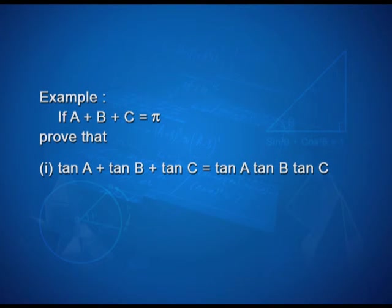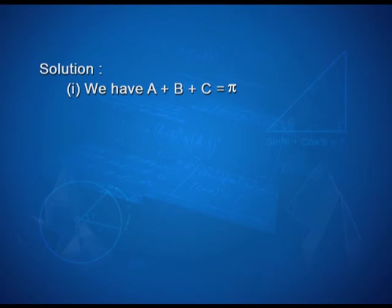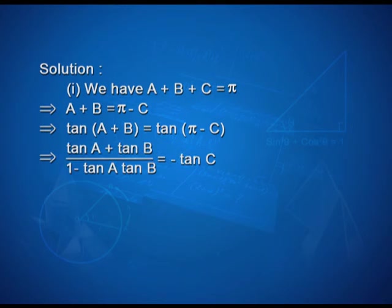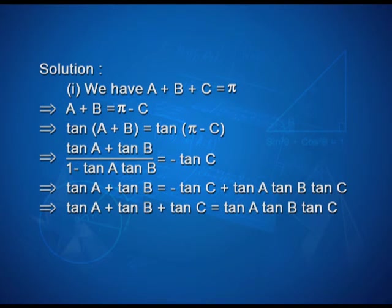Example: If A plus B plus C equals pi, prove that tan A plus tan B plus tan C equals tan A tan B tan C. Since A plus B plus C equals pi, A plus B equals pi minus C. Taking tan of both sides, tan(A+B) equals tan(pi minus C) equals minus tan C. Using the identity, (tan A plus tan B) / (1 minus tan A tan B) equals minus tan C. Cross multiplying gives tan A plus tan B equals minus tan C plus tan A tan B tan C. Rearranging, tan A plus tan B plus tan C equals tan A tan B tan C.